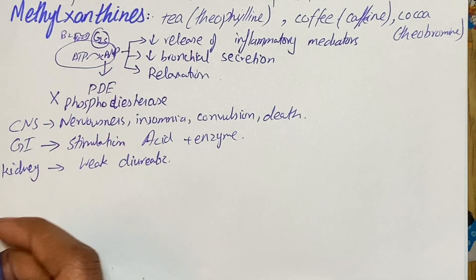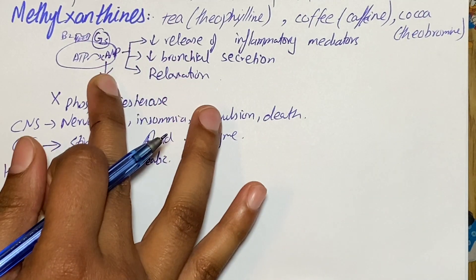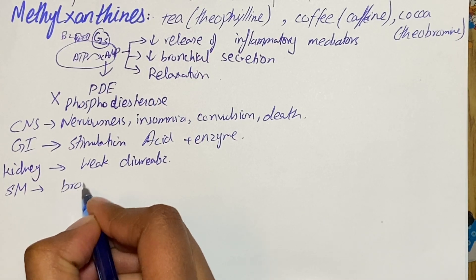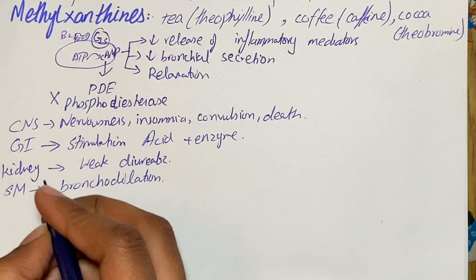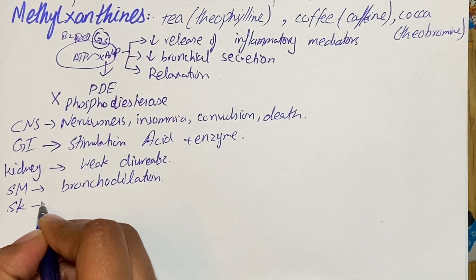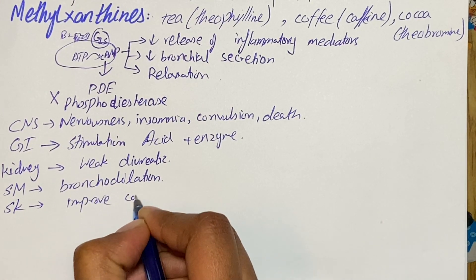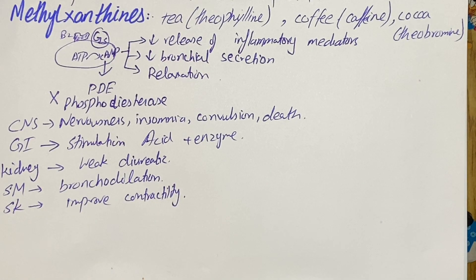If we talk about smooth muscle, which is our main concern in asthma, methylxanthines cause bronchodilation, which we require in asthma. On skeletal muscle, there is improvement in contractility. All of these are the pharmacokinetics and pharmacodynamics of methylxanthines.